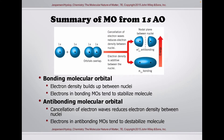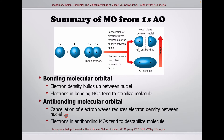Summary of molecular orbitals from 1s atomic orbitals: cancellation of electron waves reduces electron density between nuclei, producing the sigma anti-bonding 1s orbital. When electron density is additive between the nuclei, this forms the bonding sigma 1s. Electrons in bonding molecular orbitals stabilize the molecule, while electrons in anti-bonding molecular orbitals destabilize the molecule.